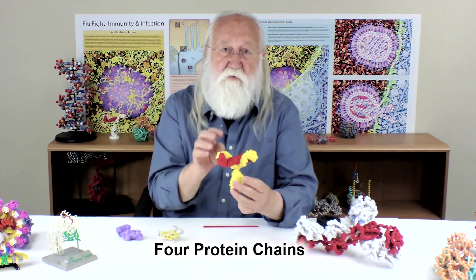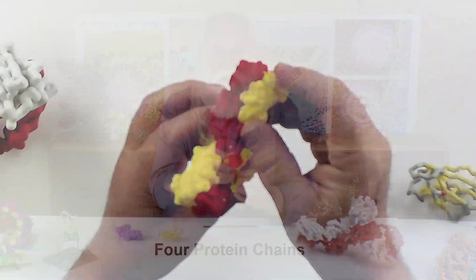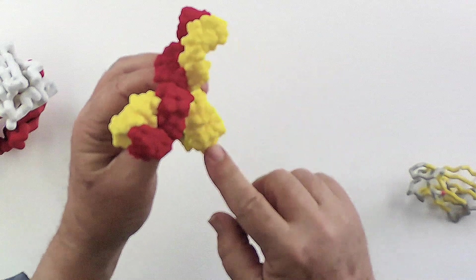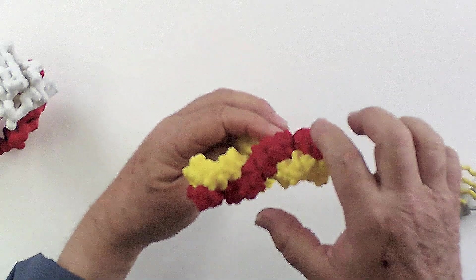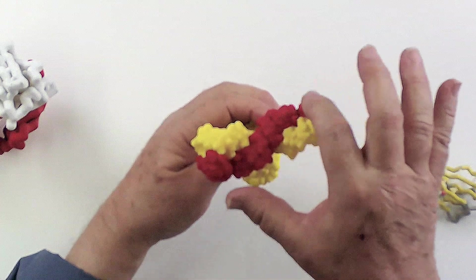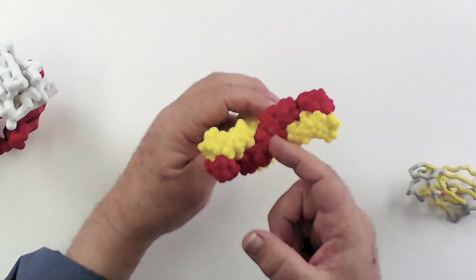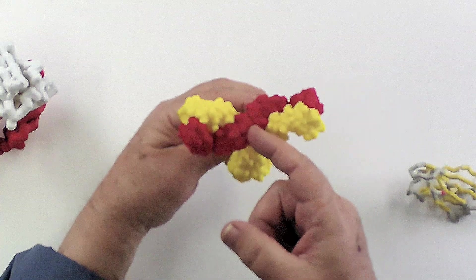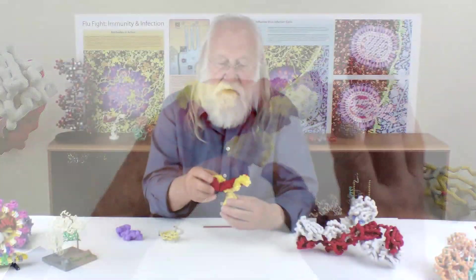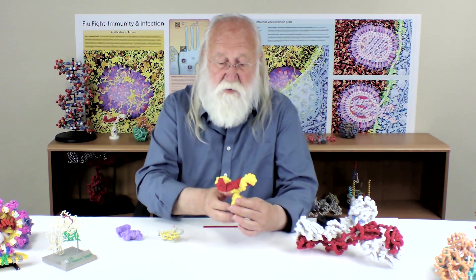This antibody protein is actually made up of four protein chains: two heavy chains, which are shown here in yellow, and then two light chains in red. It looks like this is just one light chain, but in fact this is one light chain and this is one light chain, and they're just butted up against each other right here in the center of this protein. So there are a total of four proteins, two light chains and two heavy chains that make up this protein.